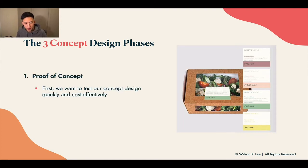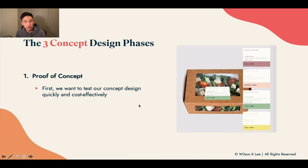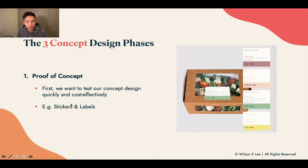First of all, proof of concept. A lot of people spend a lot of time and effort into perfecting their packaging right from the get go. I'm not saying it's wrong, but I do think that going with a minimal viable product is the best way to go, because there's going to be a lot of tweaks and a lot of versions you're going to be making. So if you spend a lot of your time on packaging and later realize that you're shifting and pivoting, it really defeats the purpose. That's why right from the get go, we are going to be testing our concept design quickly and cost effectively — printing out stickers and labels to add to that element as a temporary fix is a very good idea.